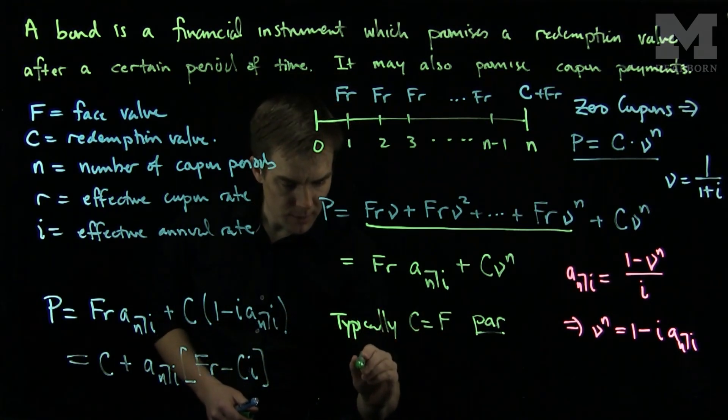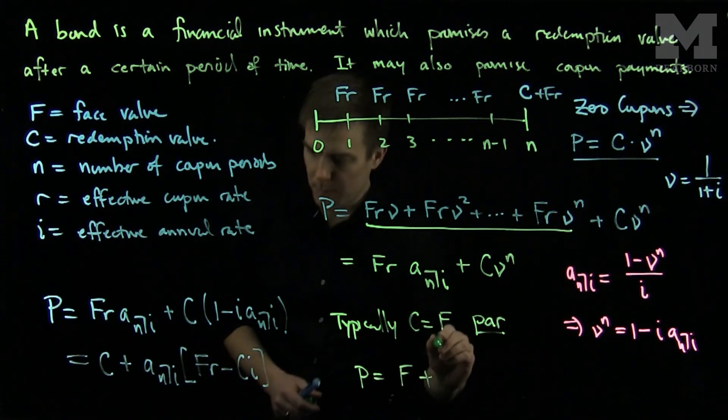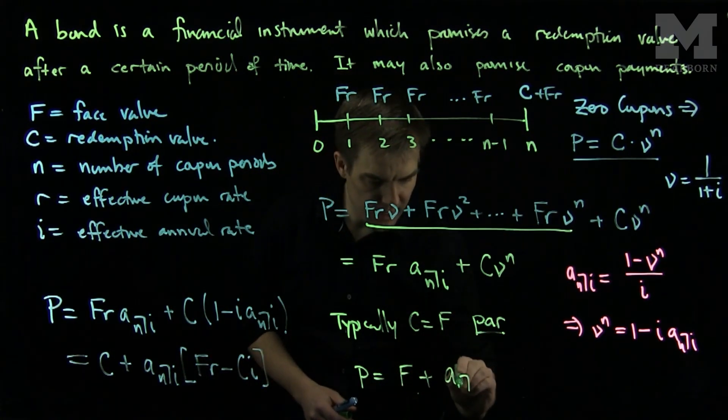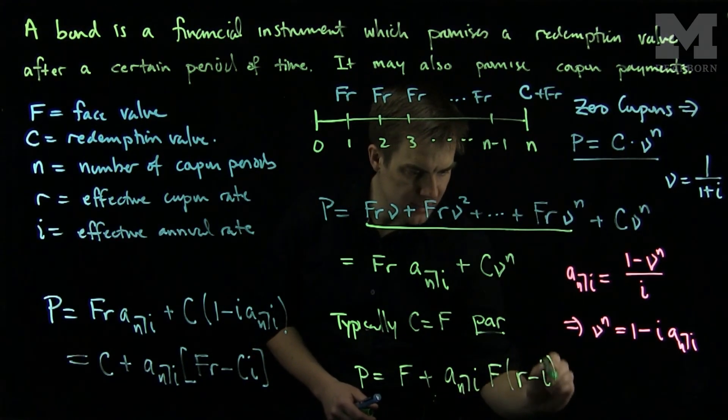In this case, the formula will simplify even further to P equals F plus a angle N at I times F times (R minus I).